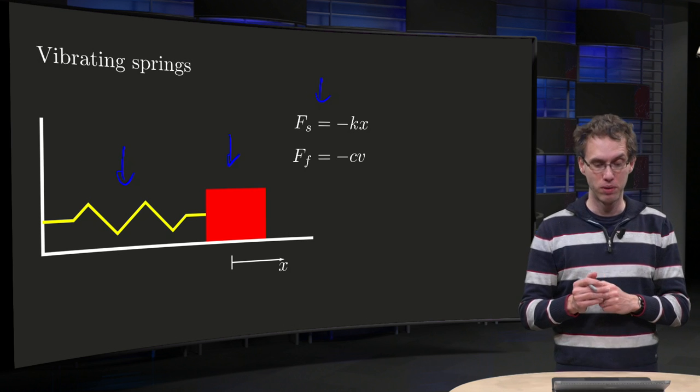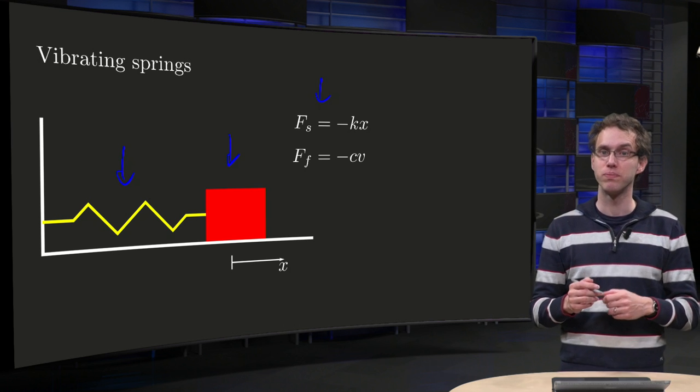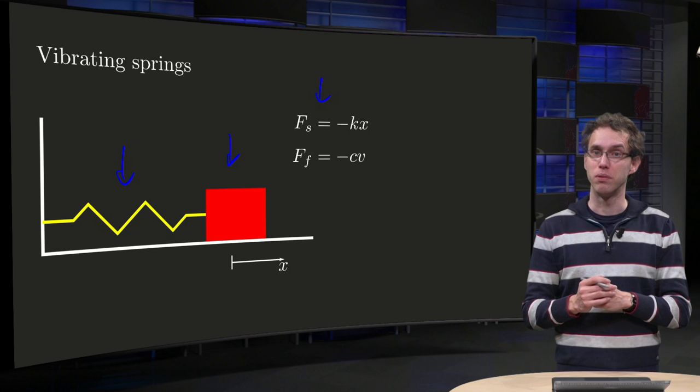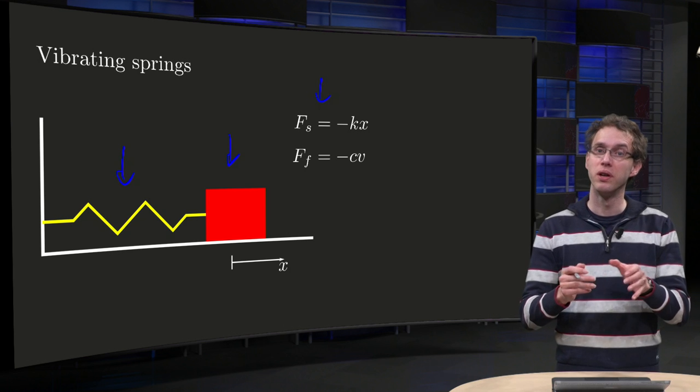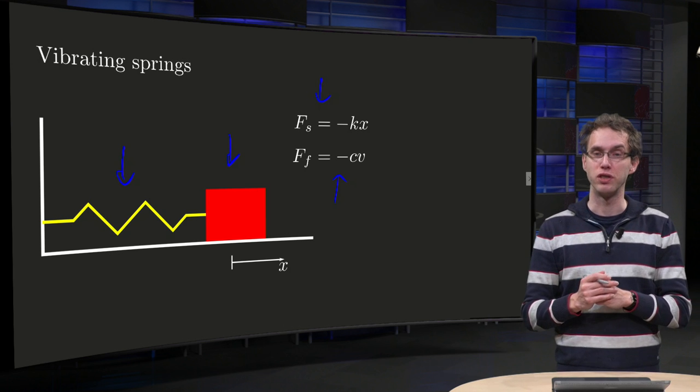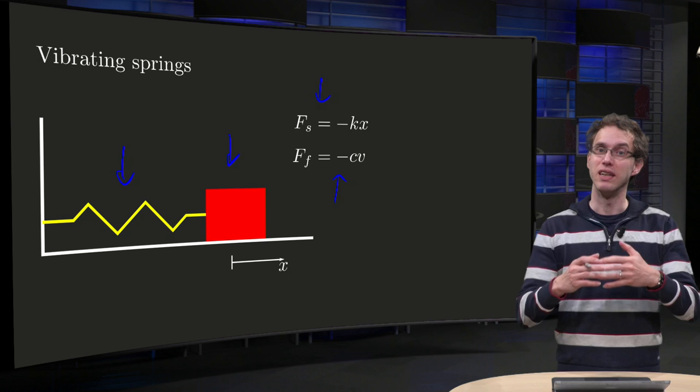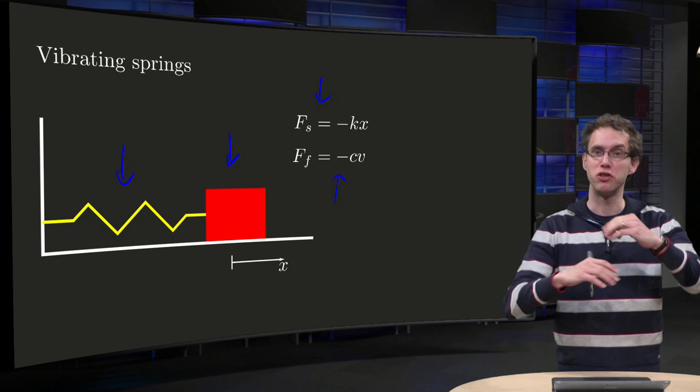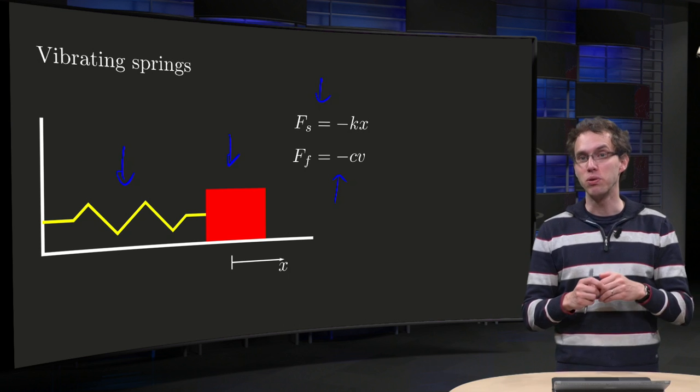And then we have to model the friction. We model it proportional to v, so we model the friction with the air. The friction force equals minus c times v, so we neglect the friction with the surface. That's a good approximation.